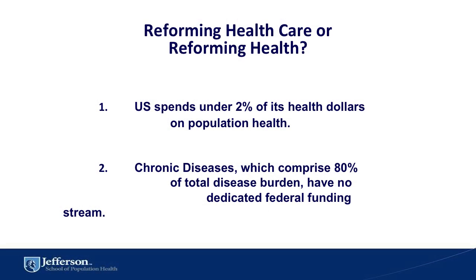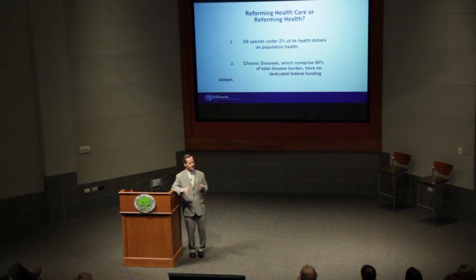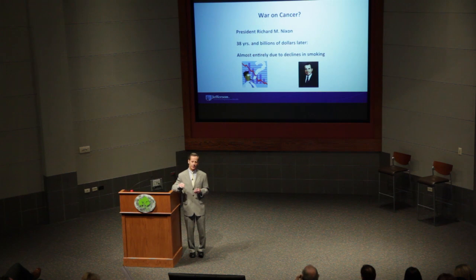So the policy conundrum is we invest hundreds of millions — actually in the billions — for NIH-type research, when very modest amounts go toward chronic disease care coordination. There's no CPT code for care coordination. This is a core problem that we face, and part of the policy challenges that we're working on.